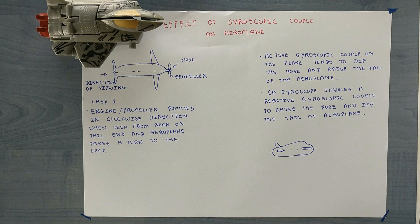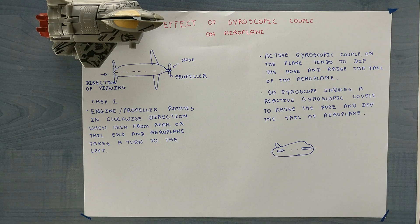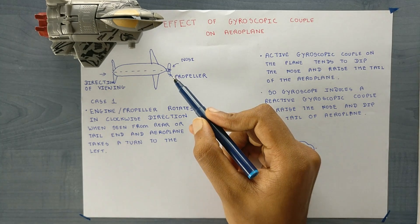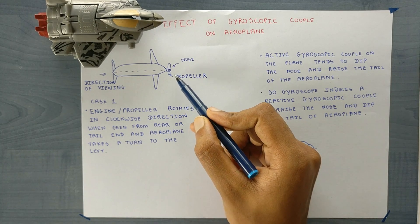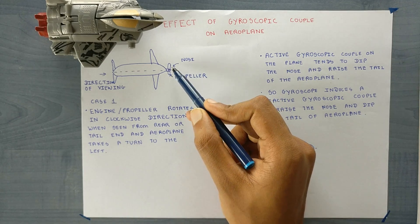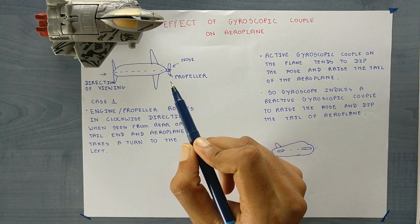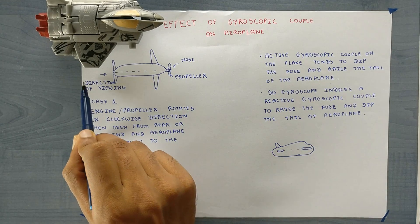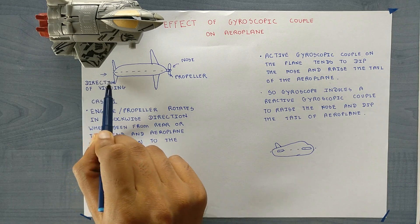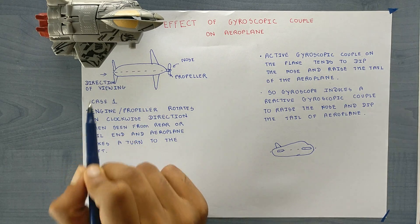Hey guys, today I will be teaching you the effect of gyroscopic couple on aeroplane. Here I have drawn the top view of the aeroplane — this is the nose and this is the propeller — and we have taken this as a convention for direction or viewing.